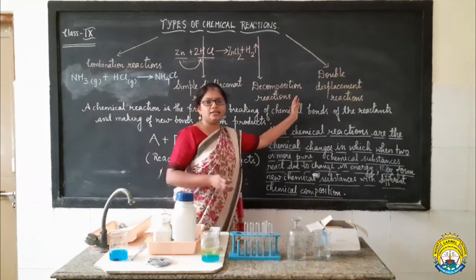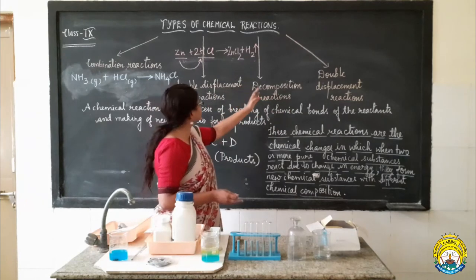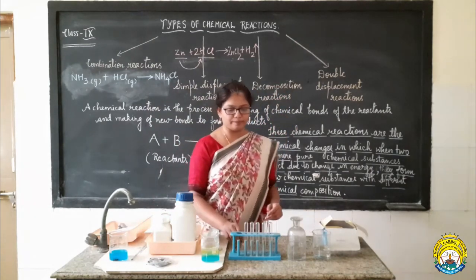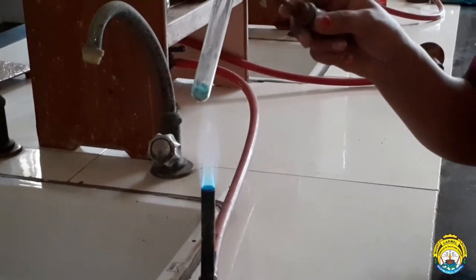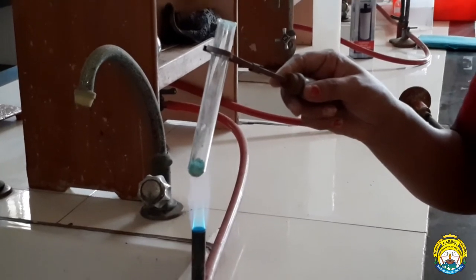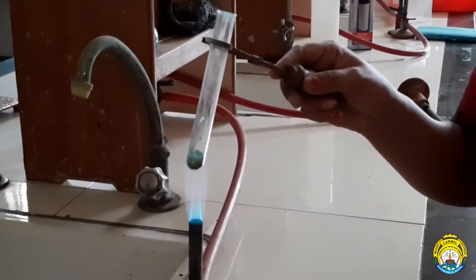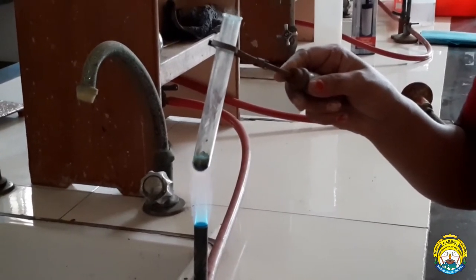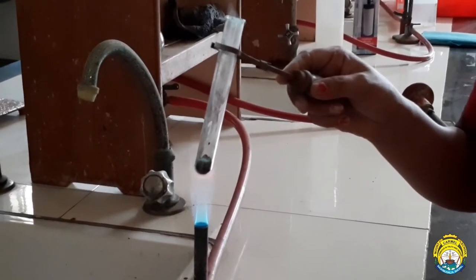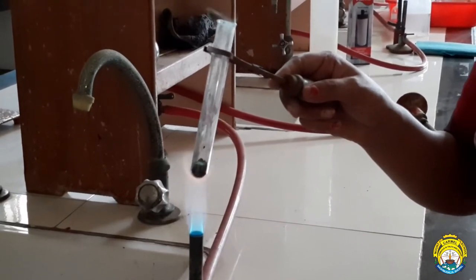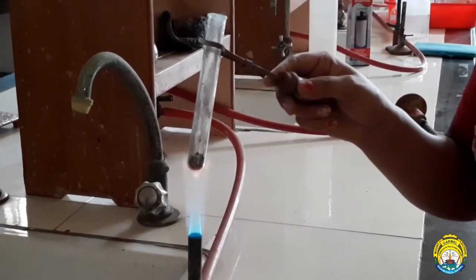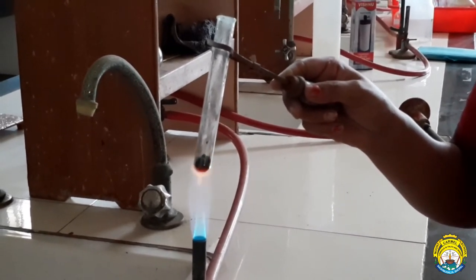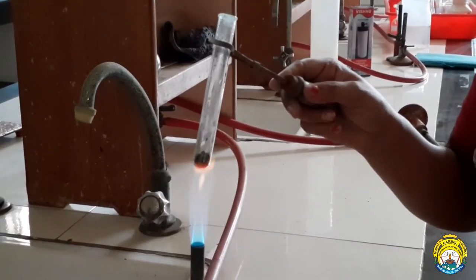Now let us come to the third type of chemical reaction, known as decomposition reaction. Let me show you something. This is a bright green color copper carbonate salt. I am going to heat it directly on the flame of the Bunsen burner. Let us see what will happen. Can you see? The green color dry salt of copper carbonate is getting converted into a black color substance.